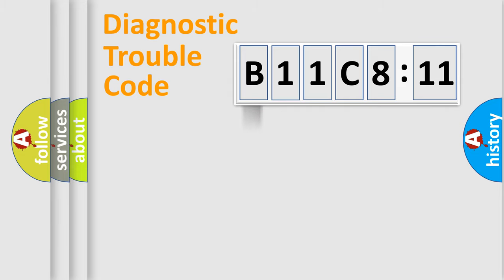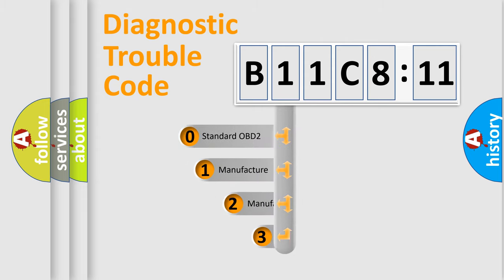Powertrain, body, chassis, network. This distribution is defined in the first character code.